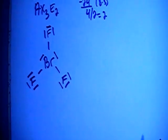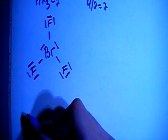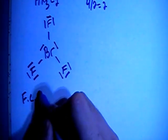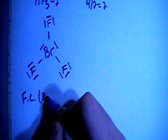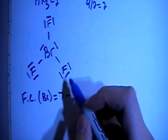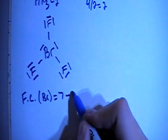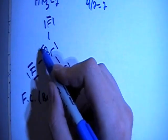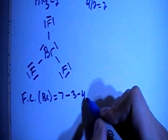And now, this should be the structure, let's go ahead and check the formal charge to verify. The formal charge on the central atom, the bromine, is 7 valence electrons brought in, minus 1, 2, 3 bonds, minus 1, 2, 3, 4 non-bonding electrons, which gives you formal charge 0.